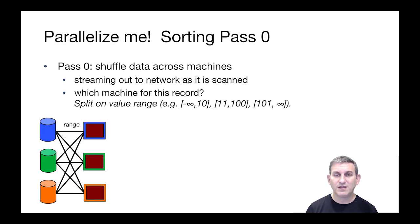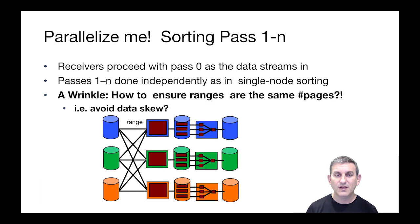So in this example, we split the data across three machines as negative infinity to 10, 11 to 100, and 101 to infinity. But how do we know that those particular split points are good ones? Well, our goal is to ensure that the ranges have the same number of pages, which is to say that each machine has to do the same amount of work and we avoid data skew.